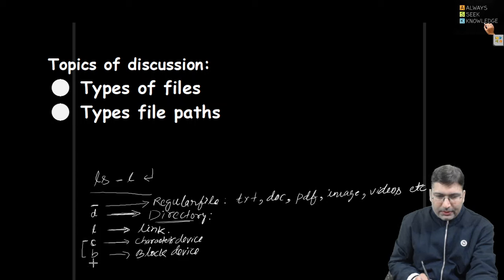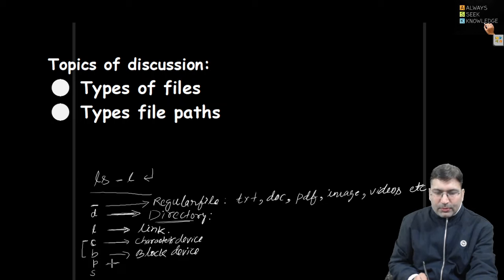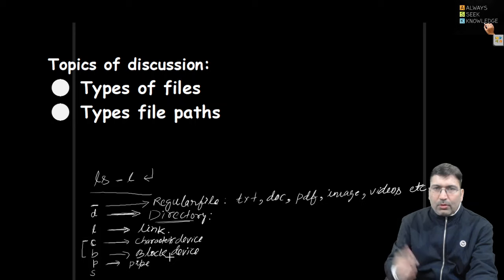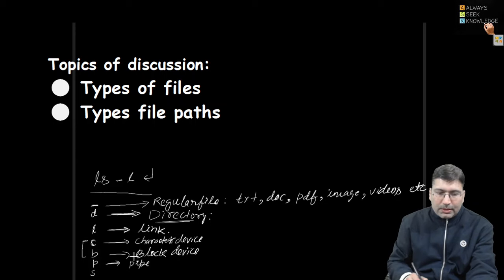In ls -l there is more possibility you may get the very first character as 'p' or 's'. If the very first character is 'p', we consider the file is a pipe file, or named pipe. We will discuss the role of pipe when we discuss inter-process communication. And 's' reflects the socket.